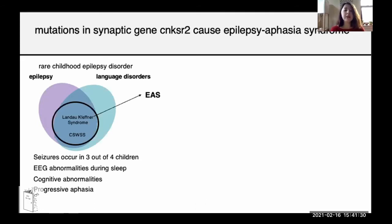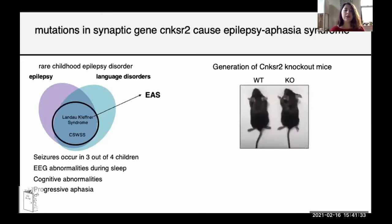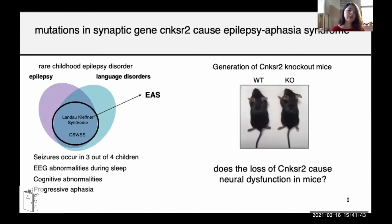To study the effects of CNK-SR2 loss in vivo, we generated a CNK-SR2 knockout mouse line. Initial characterization of these mice showed that they were overtly healthy and viable. I wanted to ask: does the loss of CNK-SR2 cause neural dysfunction in mice? For the interest of time, I just want to highlight the most interesting phenotypes in these mice.